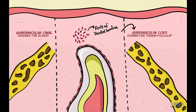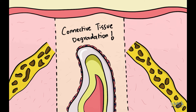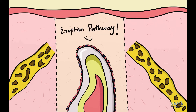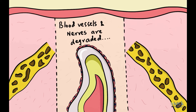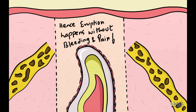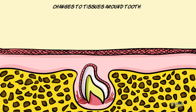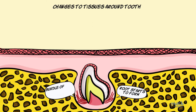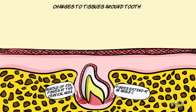After bone resorption, the reduced enamel epithelium also secretes proteolytic enzymes that degrade the connective tissue in the gubernicular canal as well as the lamina propria of the oral mucosa, making an eruption pathway for the tooth. The degradation of blood and nerve vessels along with the connective tissue accounts for eruption occurring without bleeding and pain. As the tooth erupts, the epithelial root sheath begins to proliferate and the root starts to form simultaneously. Initially, a bundle of periodontal ligament fibers appears at the cervical area of the tooth root and extends at an angle coronal to the bone.